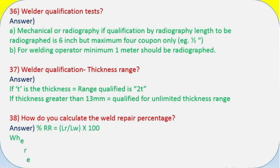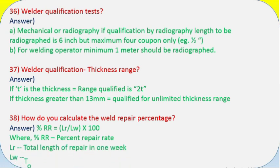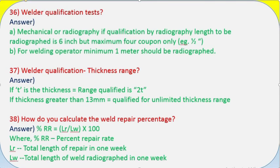Question 38: How do you calculate the weld repair percentage? Answer: Percent RR equals LR/LW times 100, where percent RR is the percent repair rate, LR is the total length of repair in 1 week, LW is the total length of weld radiographed in 1 week.